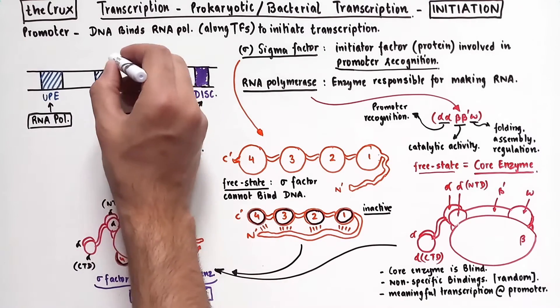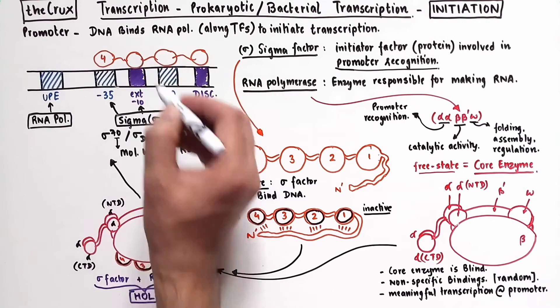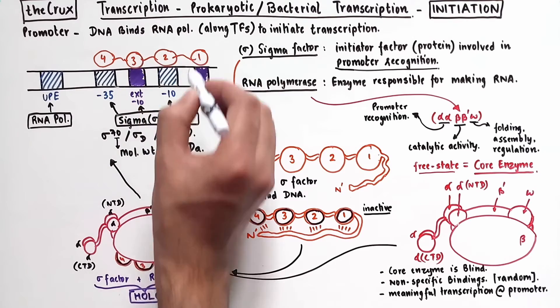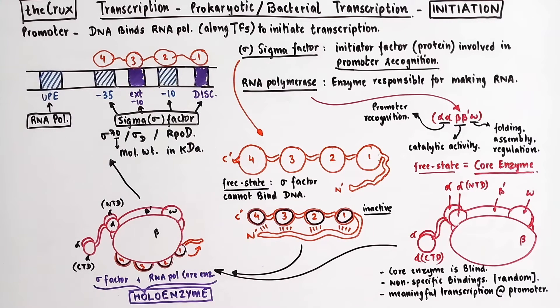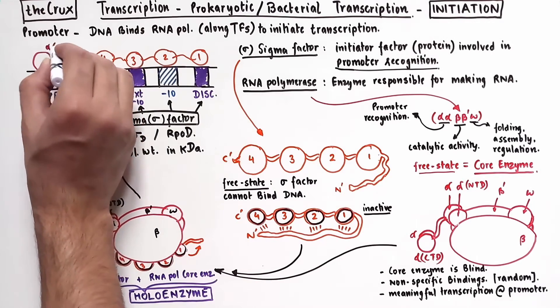Specifically, domain 4 binds to the negative 35 element, domain 3 to the extended negative 10, domain 2 to the negative 10, and if available, domain 1 binds to the discriminator element. And the two alpha C terminus regions bind the UPE element.